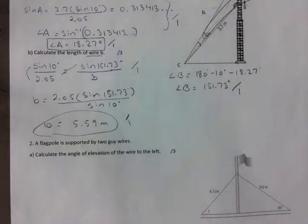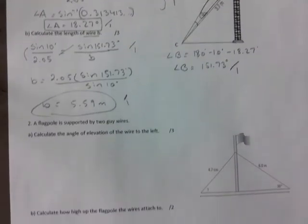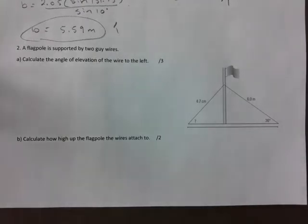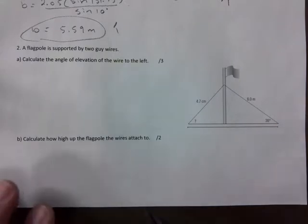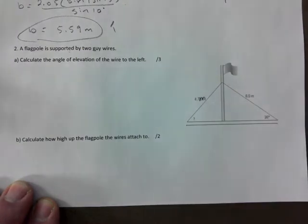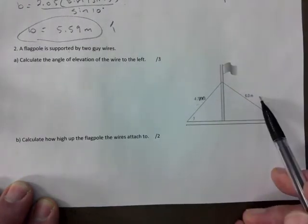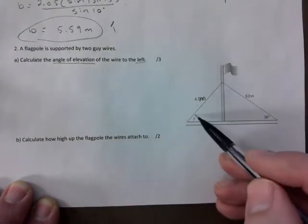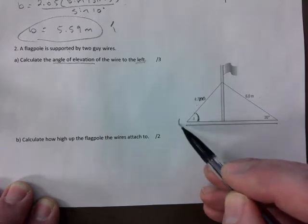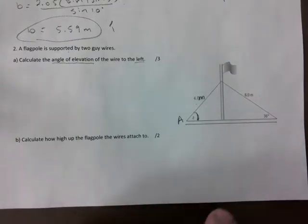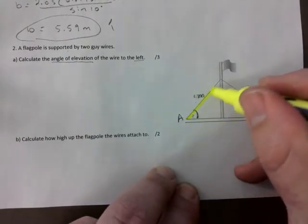The next one is going to be a bit more challenging. There's a flagpole supported by two guy wires. This is supposed to be meters. Calculate the angle of elevation of the wire to the left. So they want this one here. You can keep a question mark but I always like to attach a capital letter to the angle.